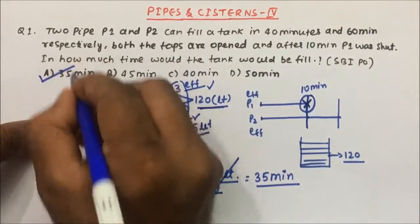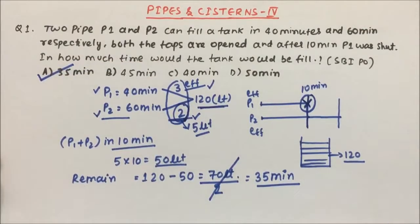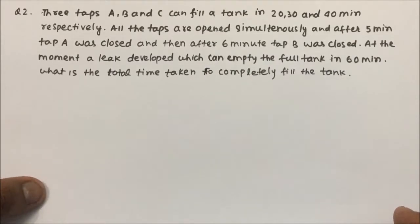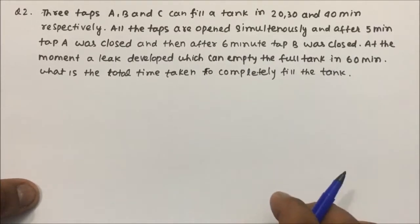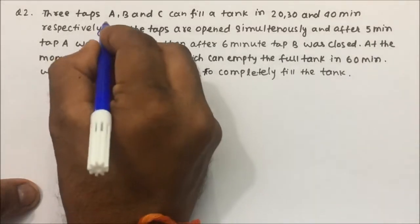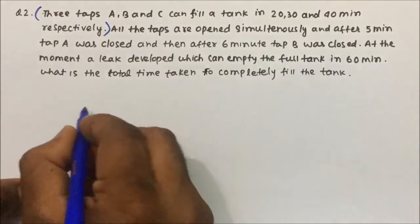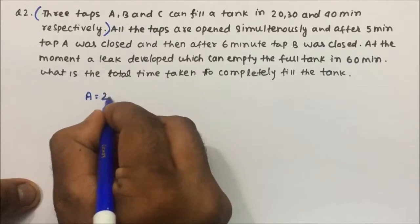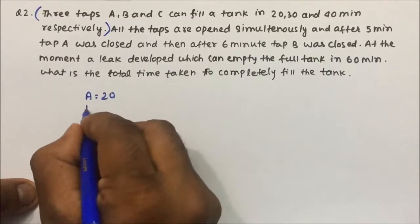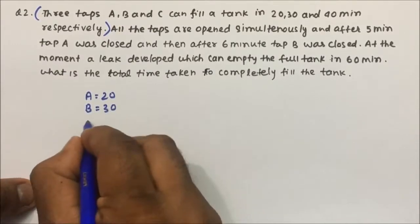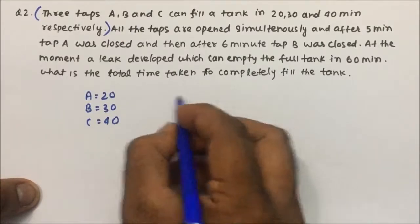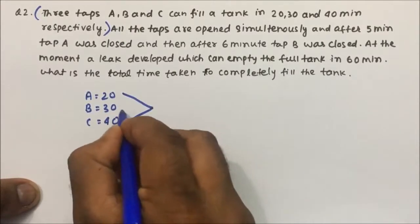So option A — 35 minutes — is the correct answer. Now question number two: three taps A, B, and C can fill a tank in 20 minutes, 30 minutes, and 40 minutes respectively. A can fill a tank in 20 minutes, B in 30 minutes, and C in 40 minutes.